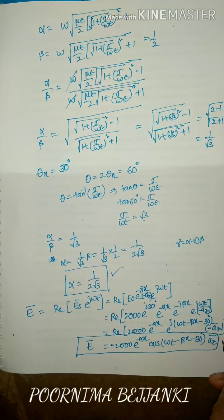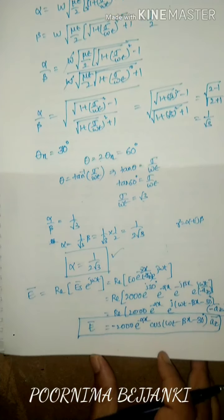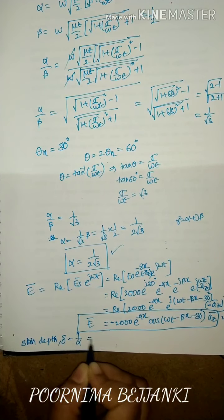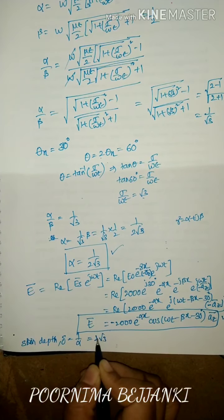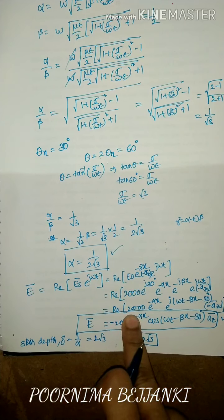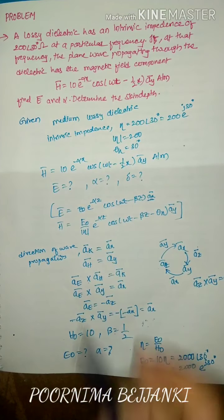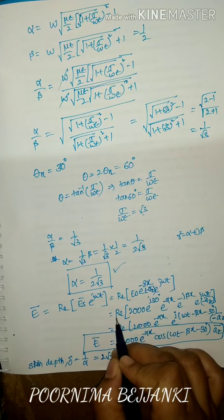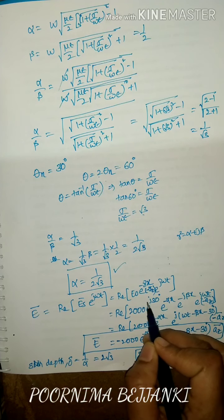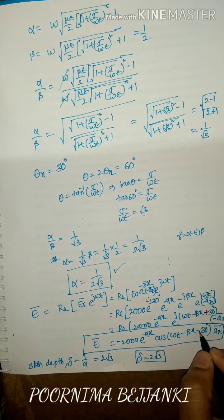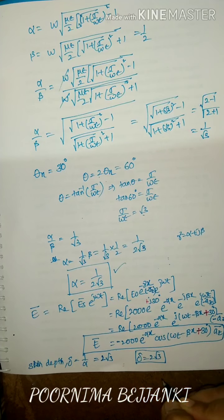The skin depth delta equals 1 over alpha equals 2 root 3. So the final answers are: alpha equals 1/(2 root 3), E-bar equals minus 2000 e^(−alpha x) cos(omega t − x/2 + 30°) a_z-bar V/m, and skin depth delta equals 2 root 3 meters.